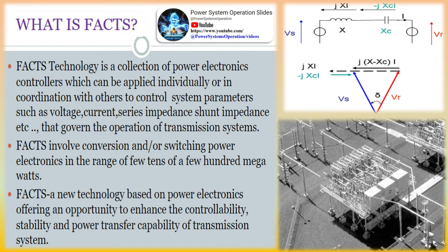There are many limitations for large AC systems, and some of them are voltage stability problems, reactive power problems, steady-state stability, transient stability, frequency control, etc.